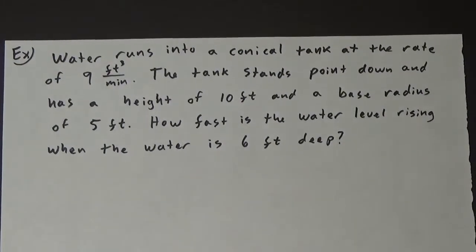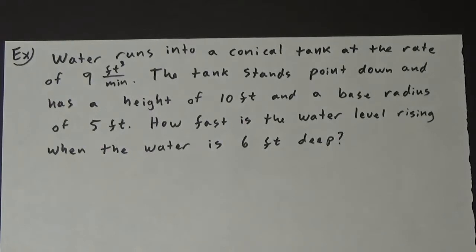Here is another example of a related rate problem. Water runs into a conical tank at the rate of 9 feet cubed per minute. The tank stands point down and has a height of 10 feet and a base radius of 5 feet. How fast is the water level rising when the water is 6 feet deep?